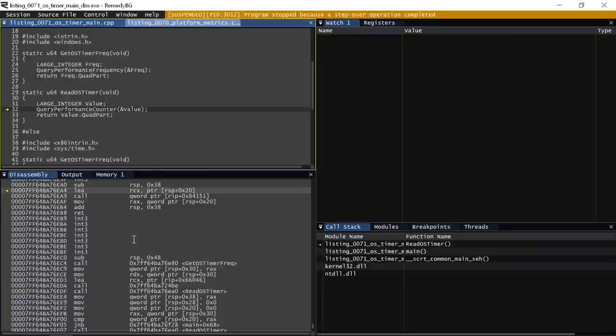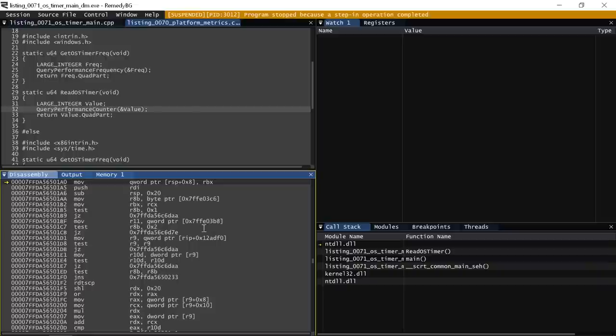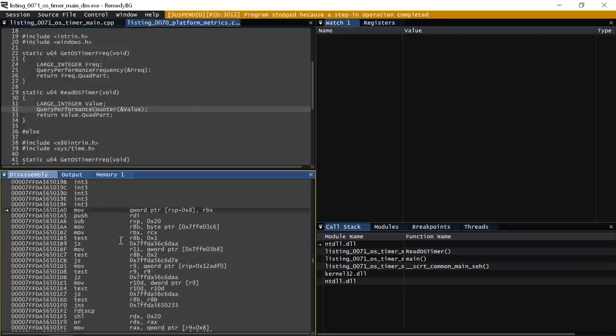what I'm going to do is switch to the disassembly view here in my debugger, and I'm just going to go ahead and step to the call instruction, which of course we already know what that does. We learned that in part one of the class. So now I'm going to step into this call. And what we can see is that I end up in the Windows function query performance counter here in the actual disassembly.